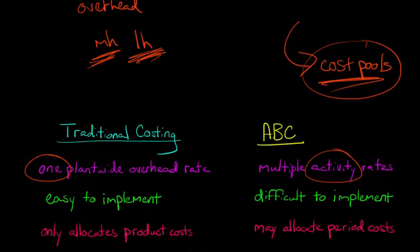But another important difference is that with traditional costing, we're only talking about product costs. When we're talking about allocating overhead, we're talking about manufacturing overhead with traditional costing. But with ABC, we could actually be talking about period costs. If you don't remember what period costs are, we're talking about things like SG&A. So we might have some SG&A expense that we decide is relevant that we want to allocate to the products, like customer support for people calling to complain about their orders.